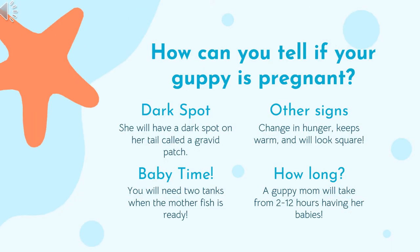Now that we've learned a little bit more about how fish reproduce, how can you tell if your guppy is pregnant and going to have babies? First, she will develop a dark spot under her tail called the gravid patch, and as her babies grow, the gravid spot will get bigger and become darker. When the mom fish is ready to have her babies, the spot will be black and the guppy will look fat. Some other signs are that she will be hungrier or not want to eat, she will want to be near the warm part of the tank, and she will look kind of square-ish.